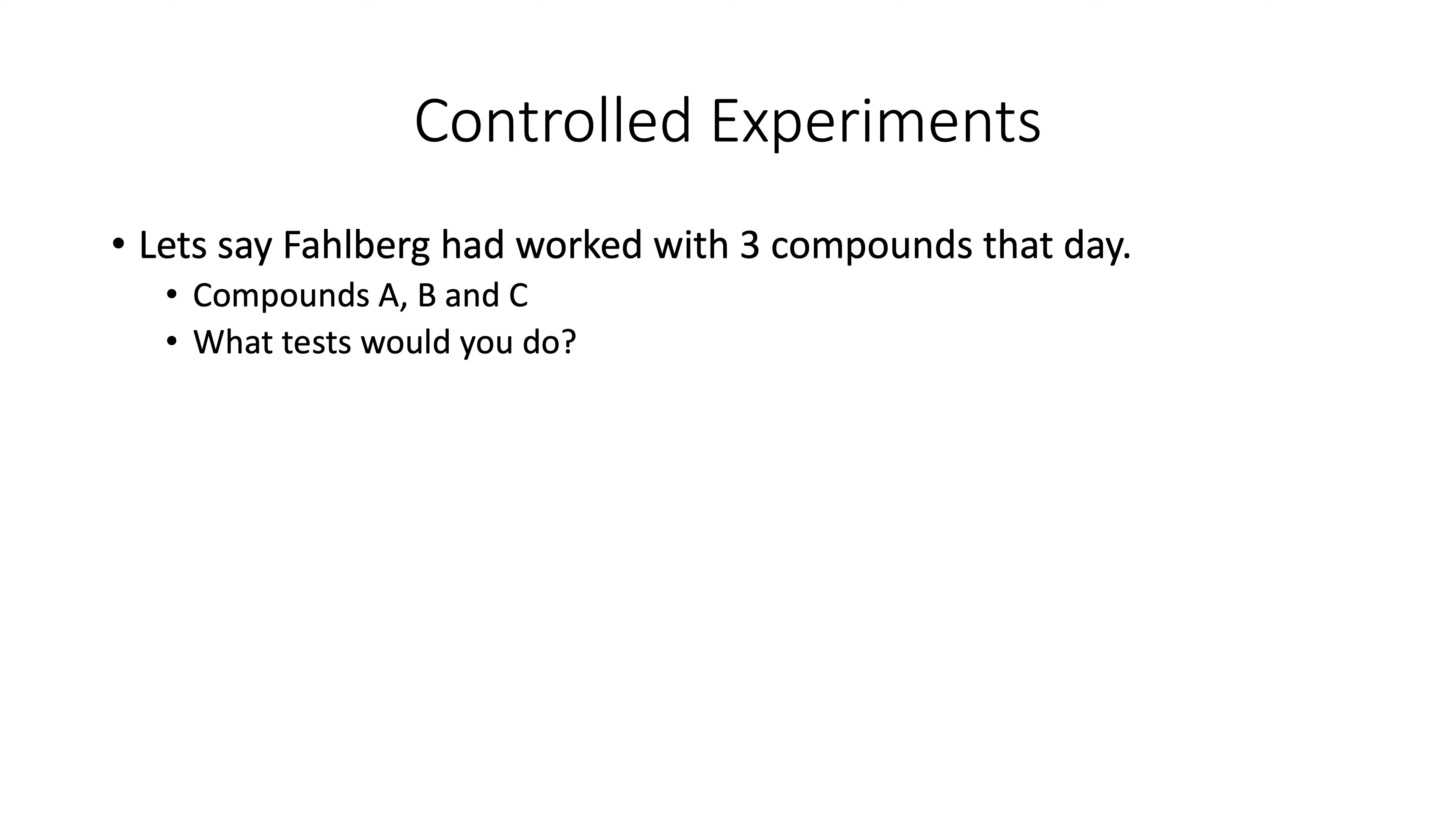For example here, let's say Fahlberg had worked with three compounds that day, which we'll call A, B, and C. Another one, hit pause. What tests would you do? Hit pause. See if you can figure out what you would test to do a control. This is what I came up with. I would test each thing separately. A by itself, B by itself, C by itself. Then I might, after that, what if none of those are sweet? Maybe I would start doing mixtures. Maybe they're not sweet on their own, but then I would do these mixtures. A-B, A-C, B-C, A-B-C. And maybe it's none of them. Maybe it was just the glassware I used had something else that was spilled on it. But you see how without even trying, I've got seven experiments to do.